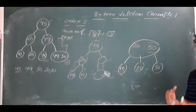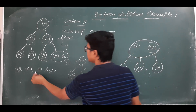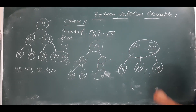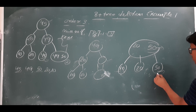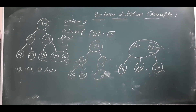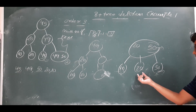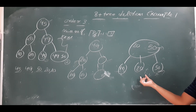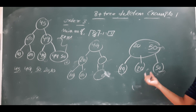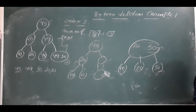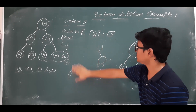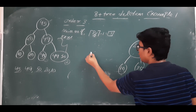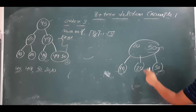Now I want to delete 50. The element 50 is in both the leaf node and the root node. We delete from the leaf node first. Deleting 50 from the leaf causes an underflow. The left sibling has the minimum number of elements and cannot lend. Since we cannot borrow from either sibling, we merge this node with its left sibling, and the corresponding entry from the parent node must also be deleted.